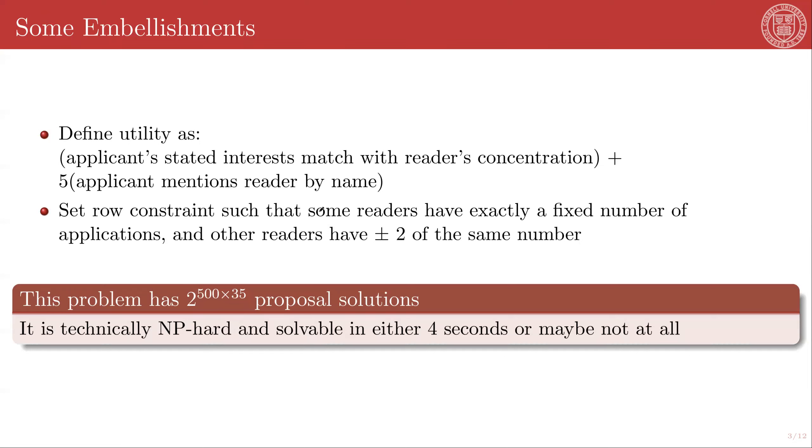So to make things even harder, I am going to also make it so that some readers, the people that I like have fewer assignments, and some readers have more assignments, but for the readers that have more assignments, they should have within plus or minus two of the same number. And I'm going to define that utility, based on my first supposition that people like to read about themselves, as one point if the applicant's stated interest intersect with each of the reader's stated concentrations, and we have a limited number of enumerated concentrations that people are allowed to choose, so it's relatively straightforward to calculate this, plus five points if the person actually mentions a given reader by name.